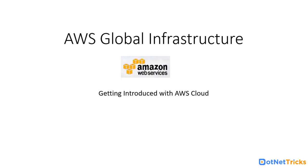AWS suggests that your infrastructure should be highly available, secure, fault tolerant, and ready for any kind of disaster recovery plan. All these things should be in place in order to deploy a robust enterprise-scale business, website, or application on AWS. So in order to understand how you can achieve all this in the cloud, on AWS cloud, the first step is understanding the AWS Global Infrastructure, and that is what we are going to talk about.